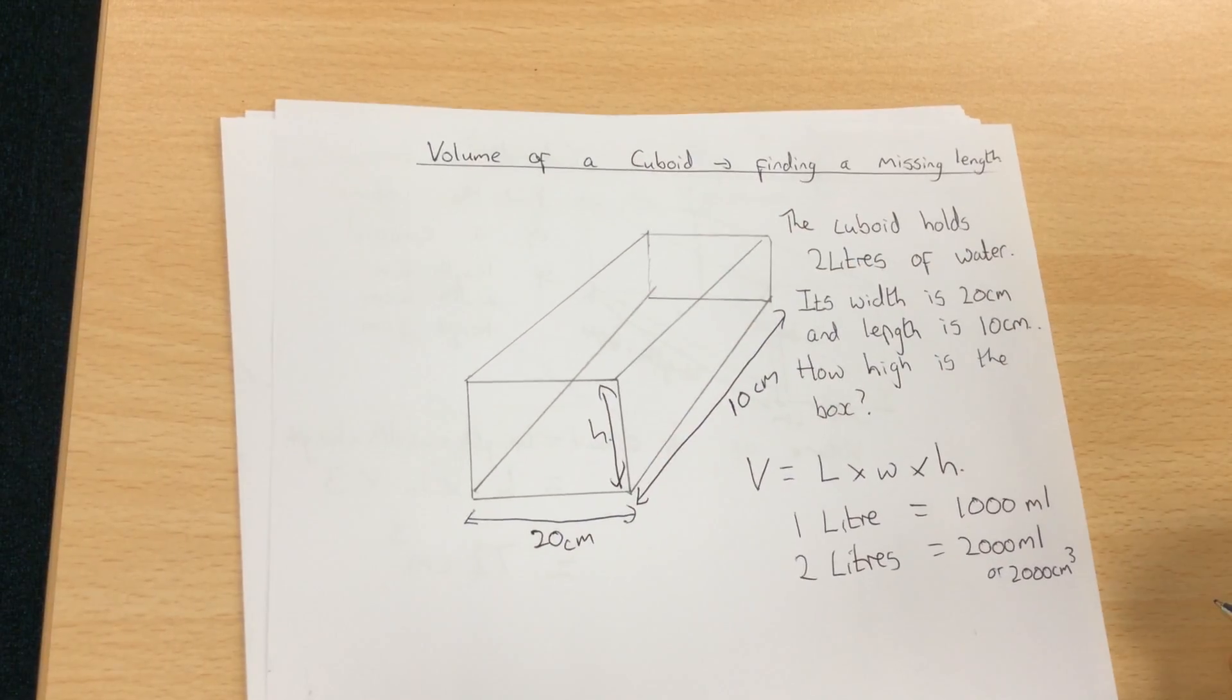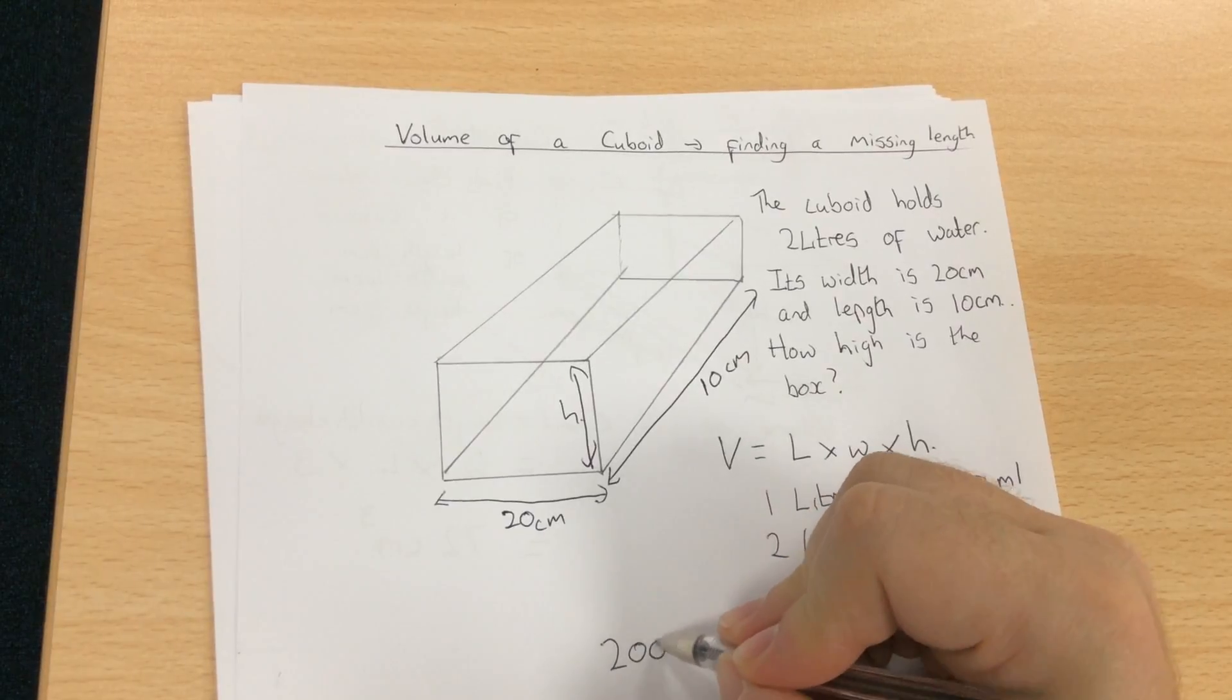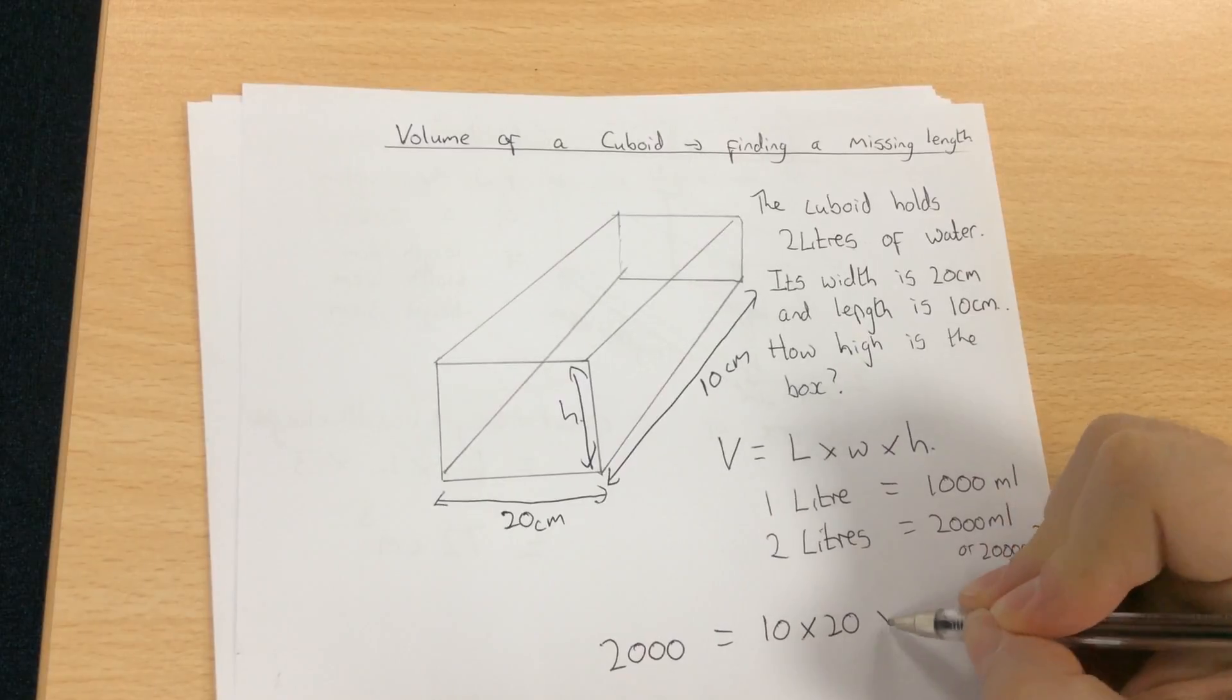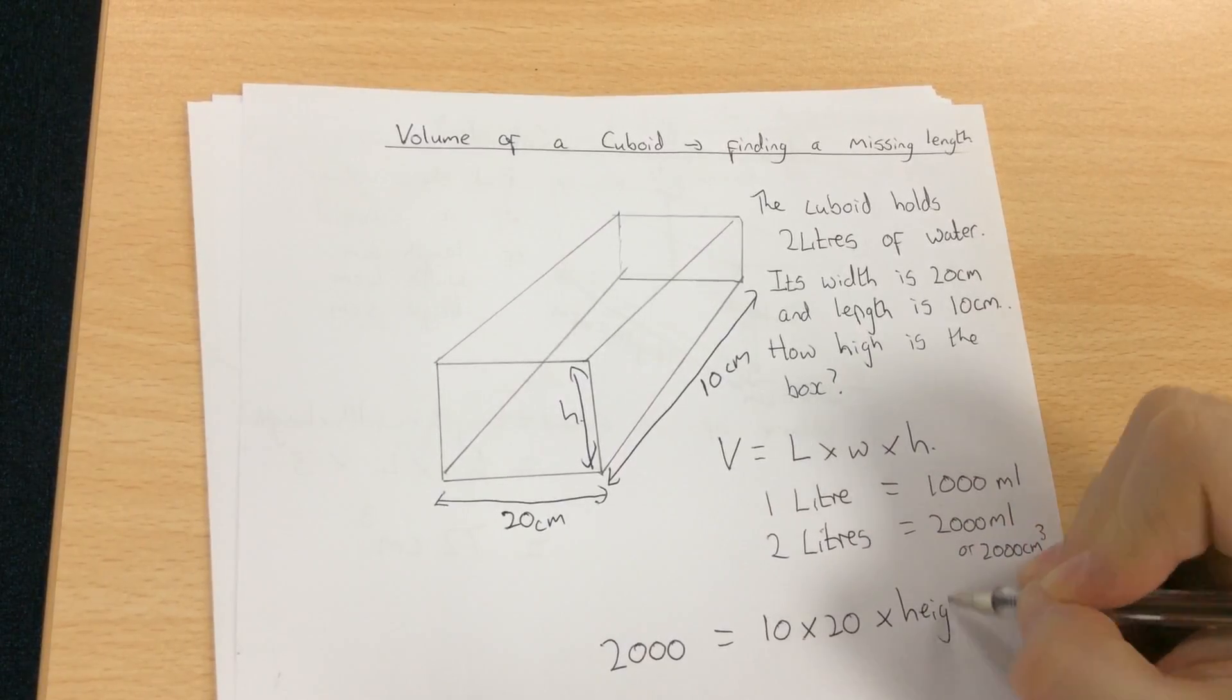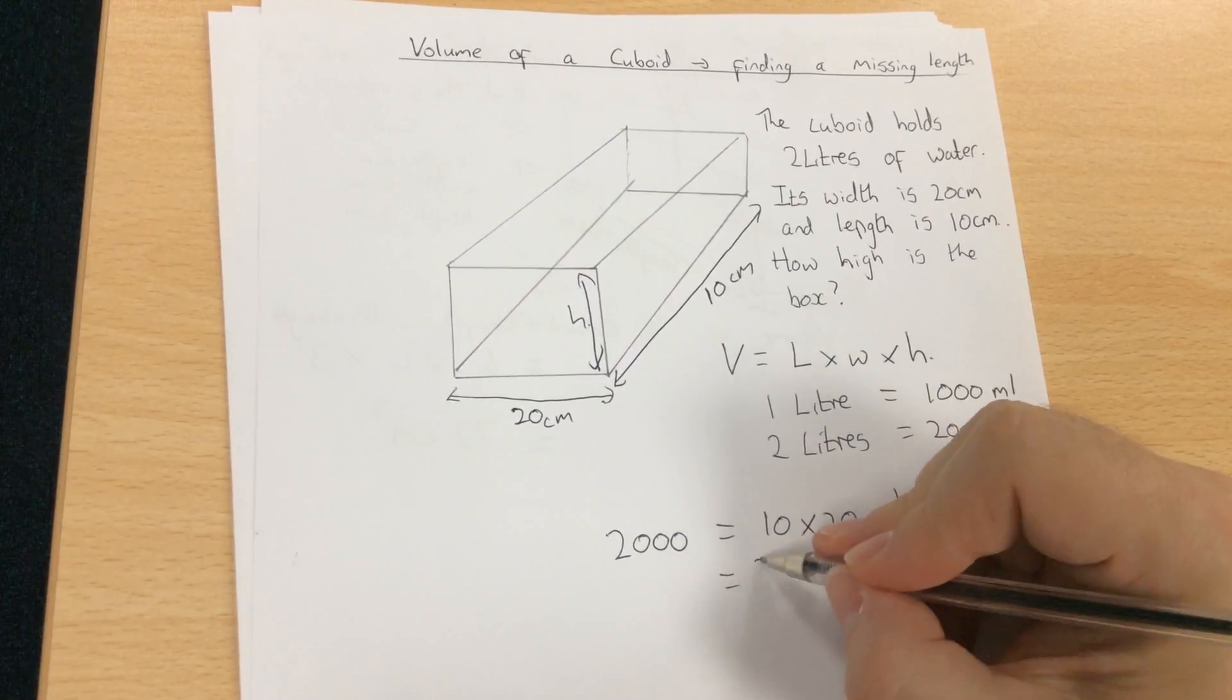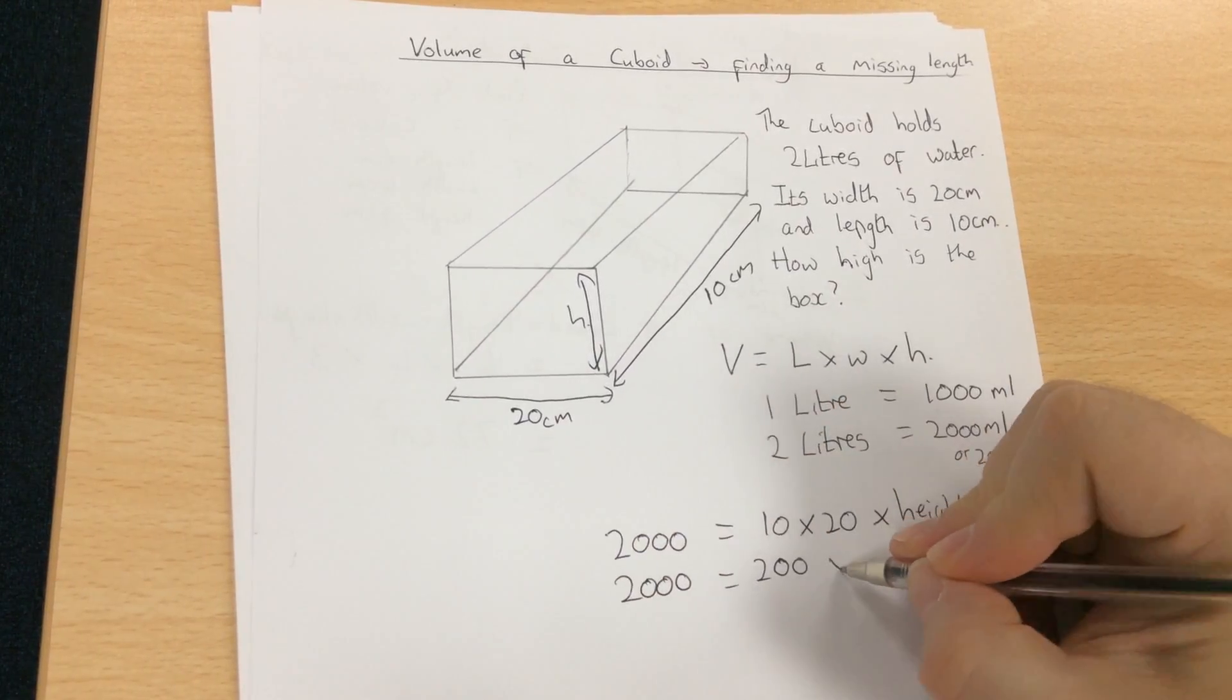Using the formula, the volume is equal to 2000 and that's equal to length times width times our missing height. So what I'm able to do now is 10 times 20 is 200, so 2000 equals 200 times the height.